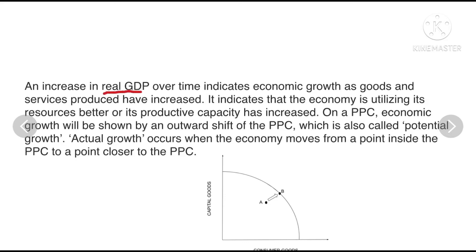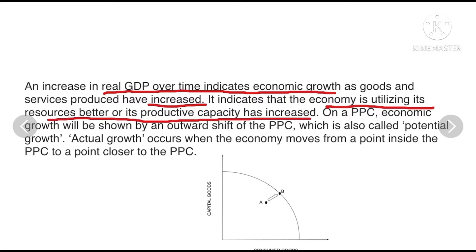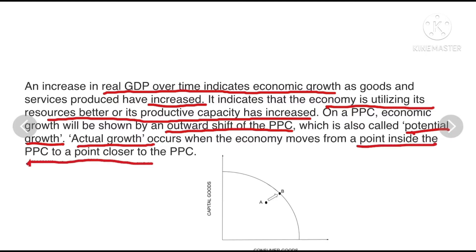An increase in real GDP over time indicates economic growth, as goods and services produced have increased. It indicates the economy is utilizing its resources better or its productive capacity has increased. On a PPC curve, economic growth is shown by an outward shift of the PPC, also known as potential growth. Actual growth occurs when an economy moves from a point inside the PPC to a point closer to the PPC.